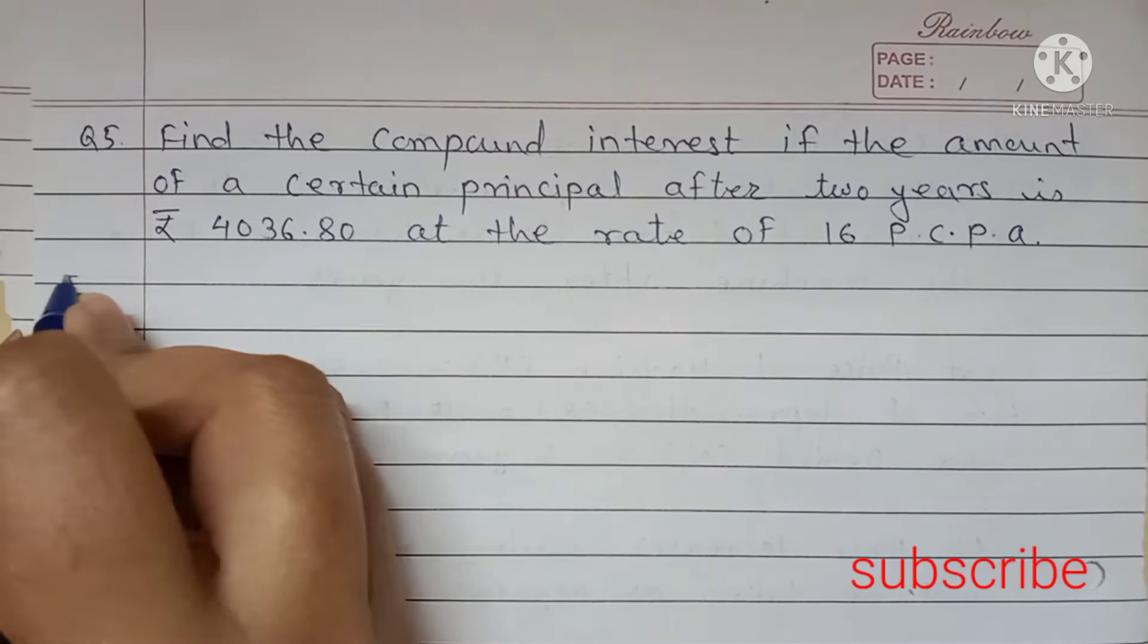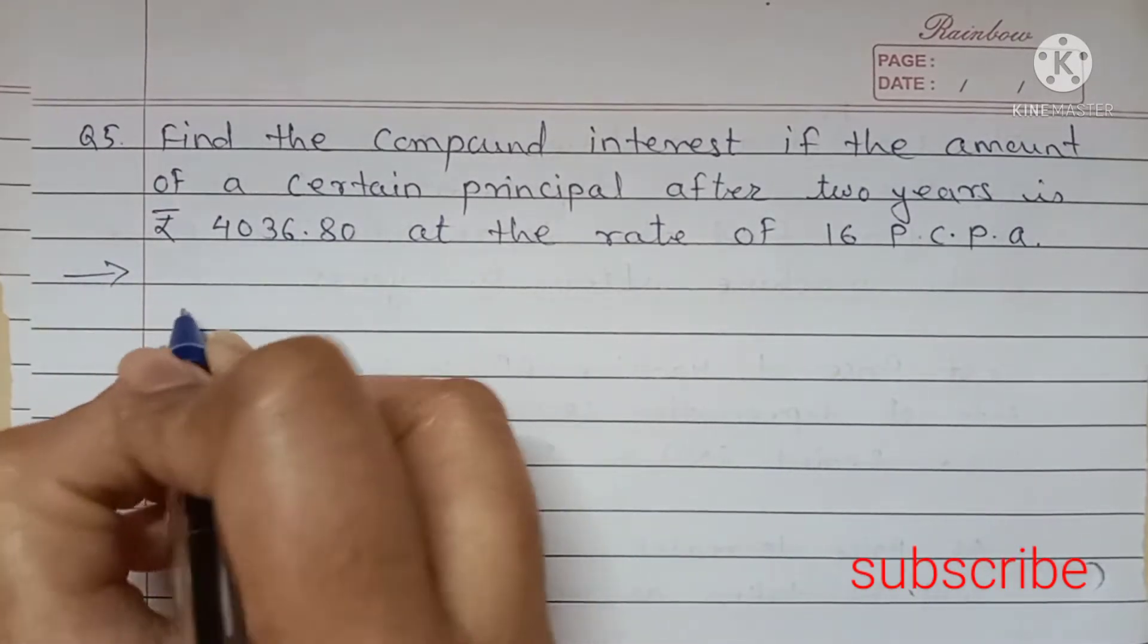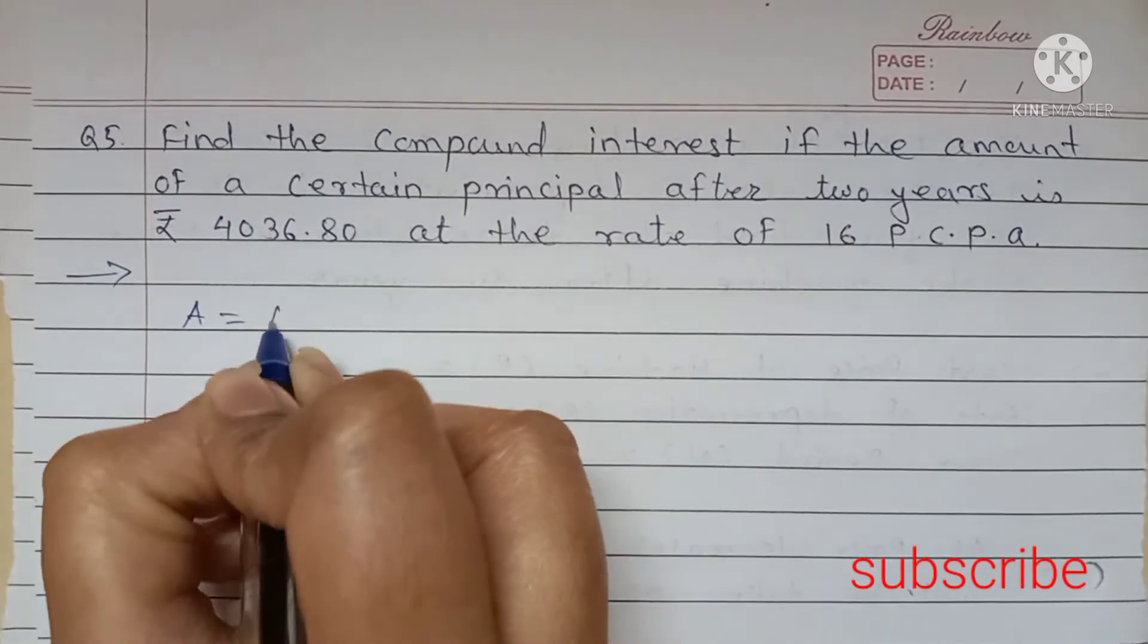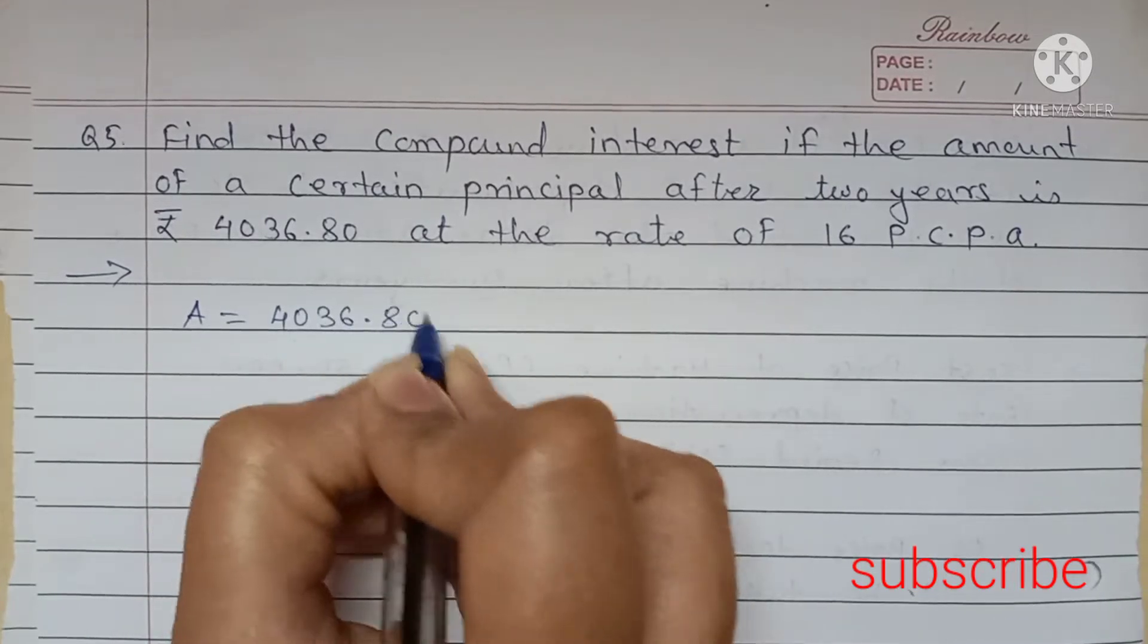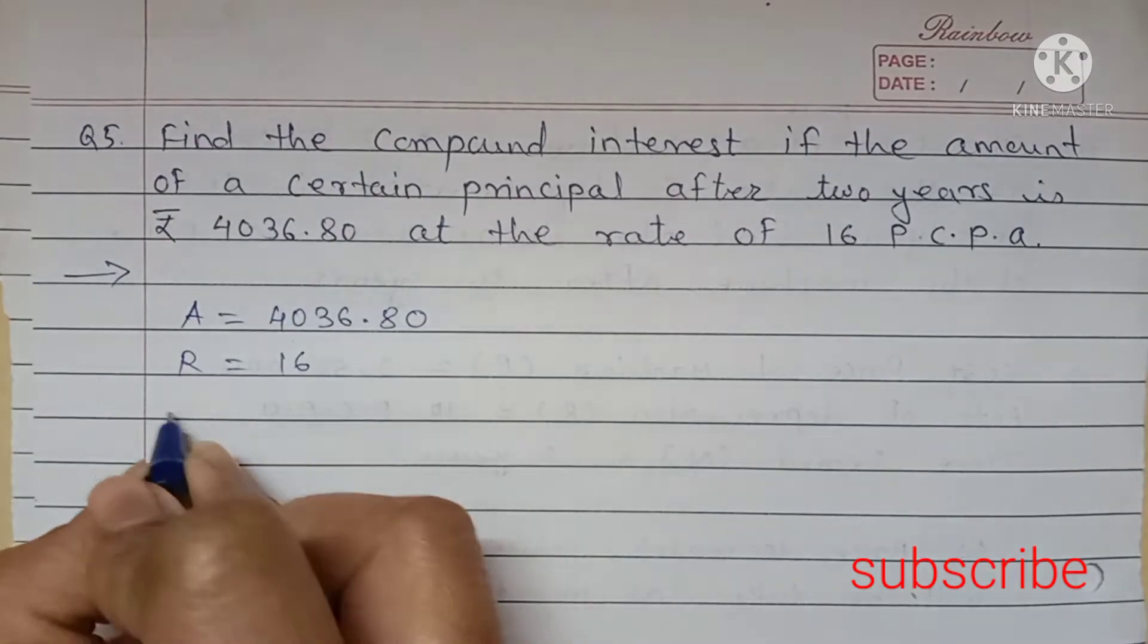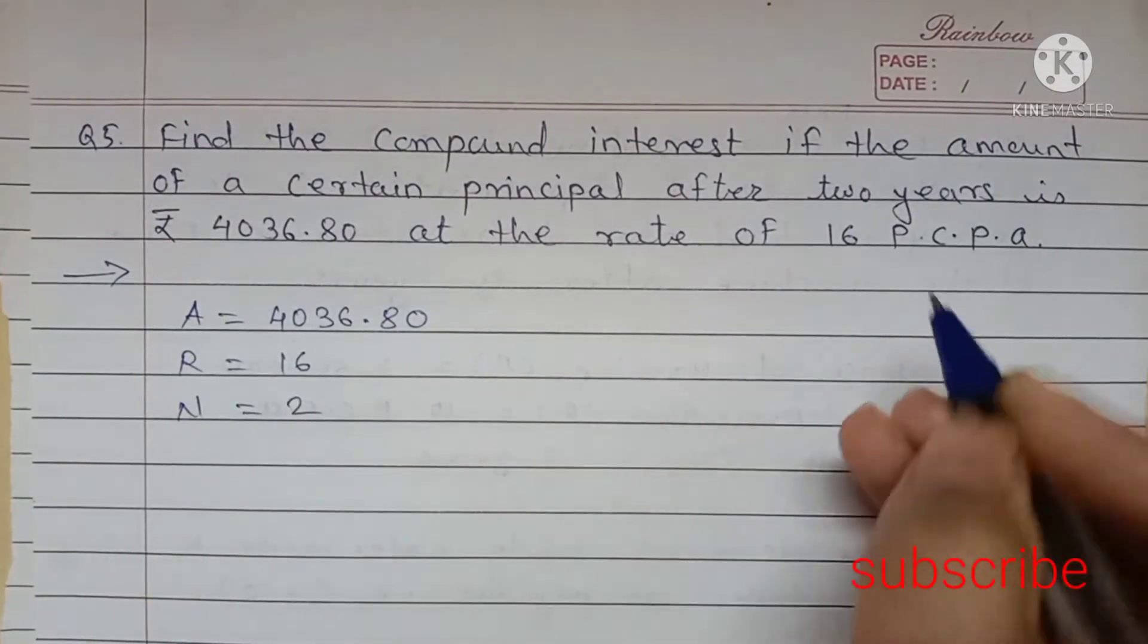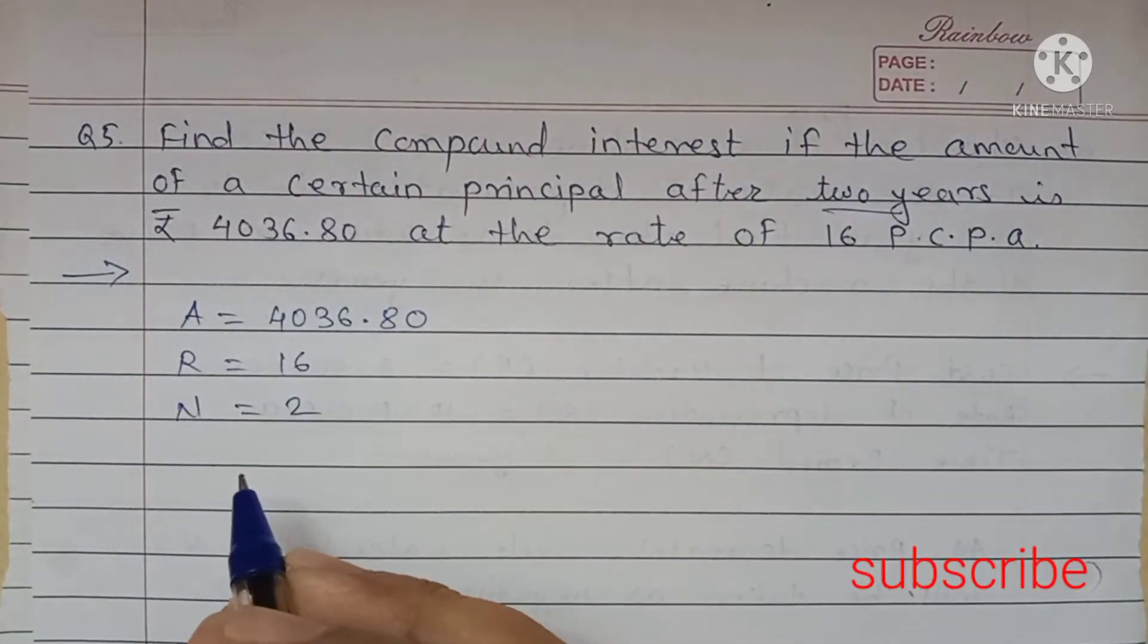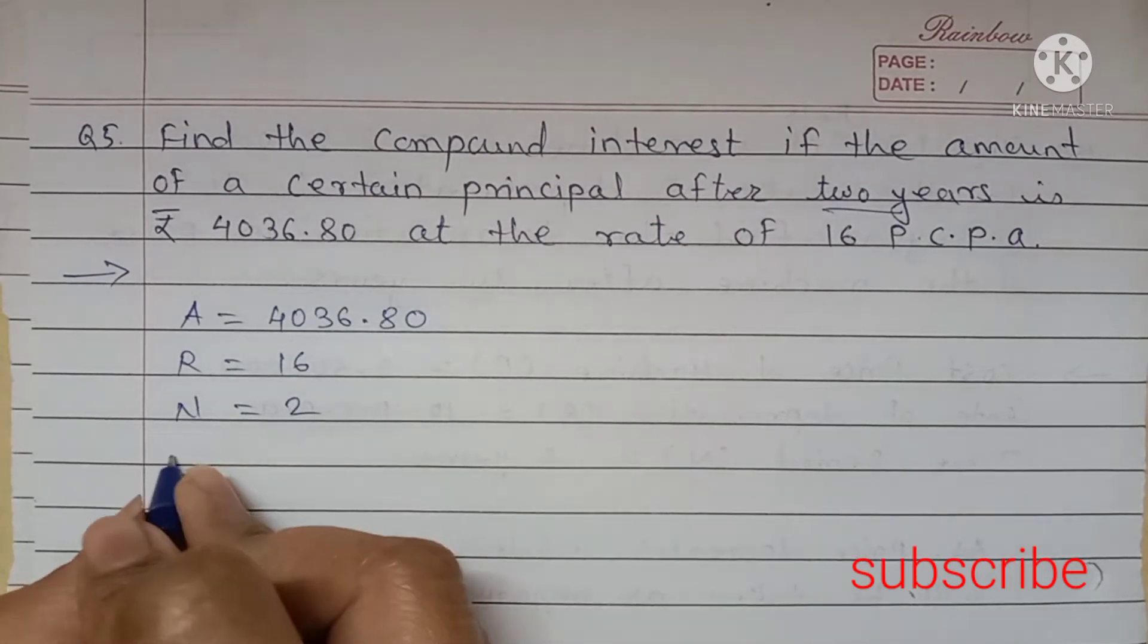Find the compound interest. Here, first we will write down what is given. Amount is given. R is given, 16. N is given, 2 years. And you can find out compound interest.